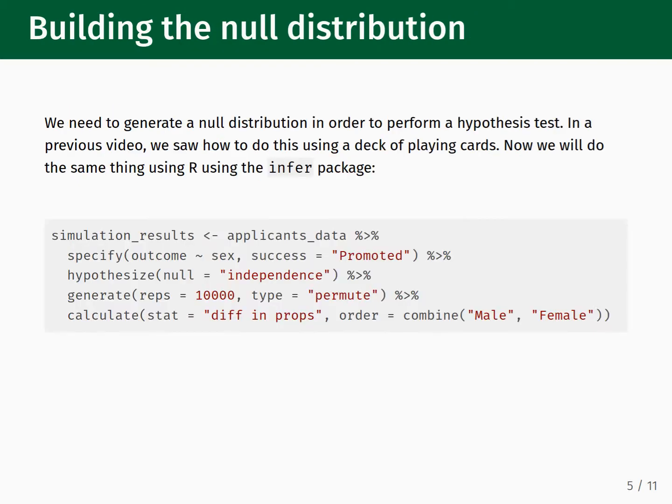We need to generate a null distribution in order to perform a hypothesis test. In a previous video we saw how to do this using a deck of playing cards; now we will do the same thing using R and the infer package. The code block shows how to generate the null distribution for this dataset. There are four functions we use: specify, hypothesize, generate, and calculate. Every time you generate a null distribution you will use these four commands in this order — the only thing that changes are the input parameters.